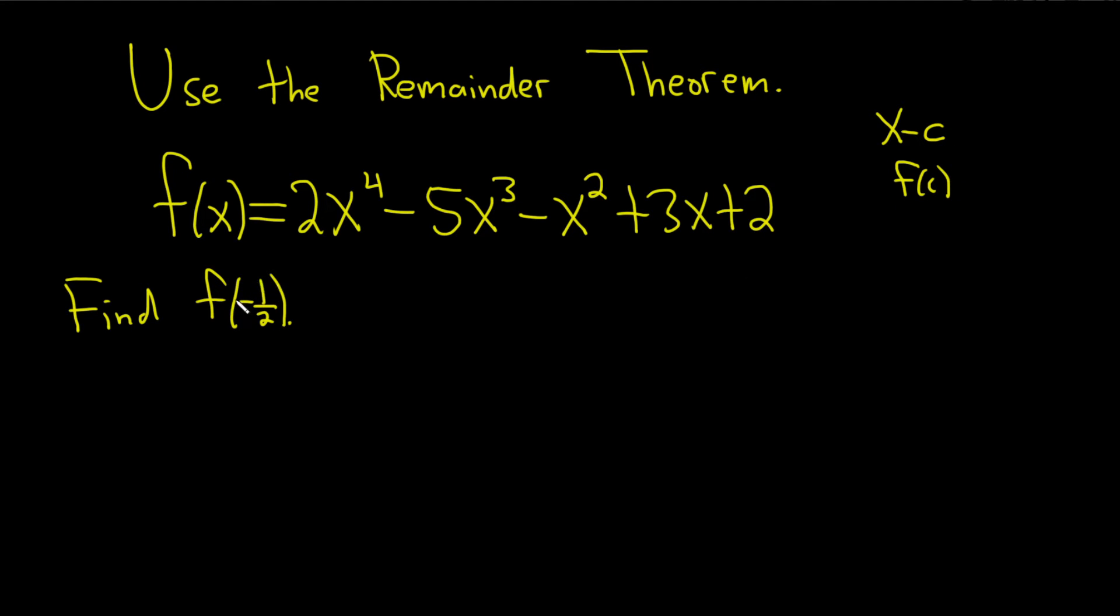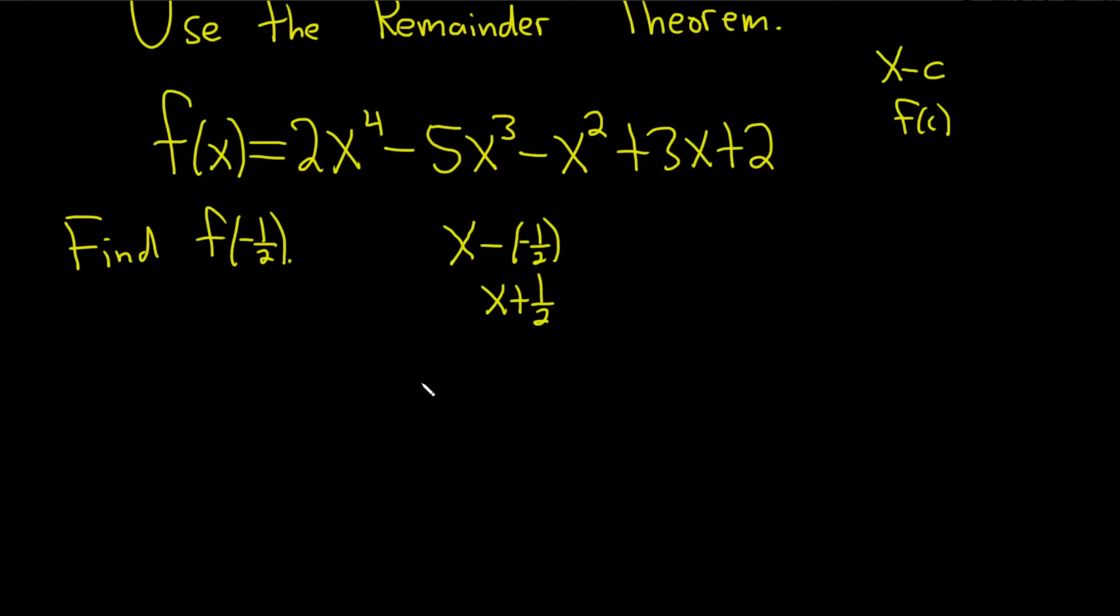So here our c is negative 1 half. So to find f of negative 1 half, we have to divide by x minus negative 1 half. In other words, we have to divide by x plus 1 half. So let's do that. Let's divide by x plus 1 half. And let's do it with synthetic division because that's much easier.